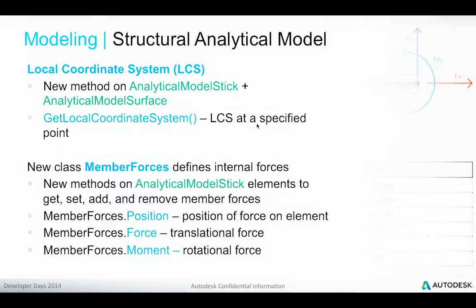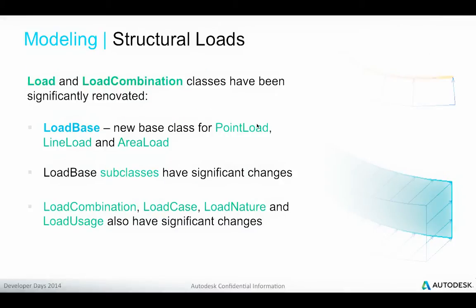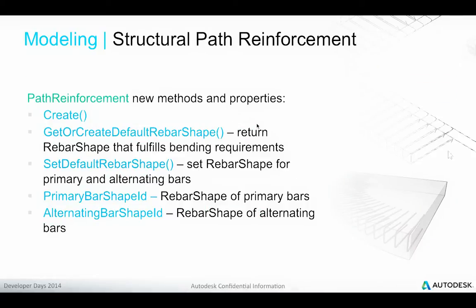The stick and surface models now define local coordinate systems which can be retrieved using the getLocalCoordinateSystem method. New classes have been introduced to handle internal member forces, applying to stick model elements to define and retrieve the member forces, their positions, forces, and moments. Structural loads have been renovated — specifically the load and load combination classes. There is now a new base class for point, line, and area loads. The subclasses have been enhanced, as have the load combination, case, nature, and usage classes. The structural path reinforcement class has new methods and properties — a complete renovation of this API.